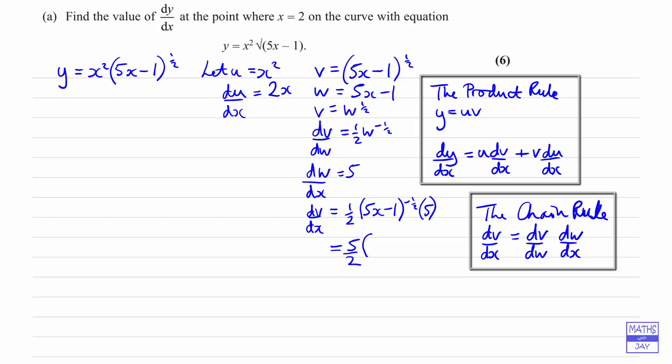So we can simplify this by bringing the 5 to the front, putting it over the 2, and then we've got 5x minus 1 to the minus a half. We could actually rewrite this now as 5 over 2 root 5x minus 1. It'll be easier to deal with when we're inputting it to the calculator, once we've substituted in a value for x.